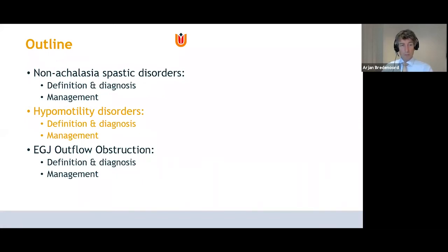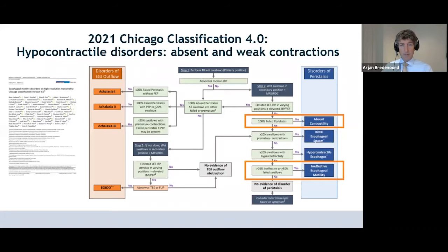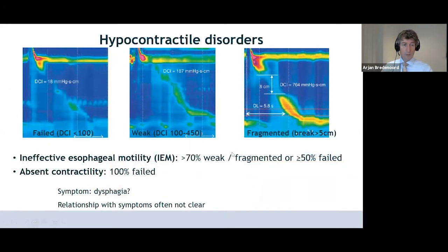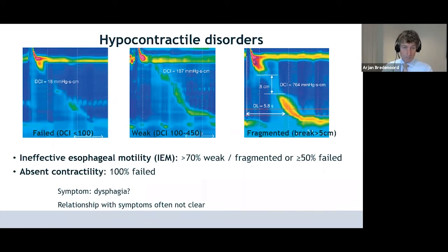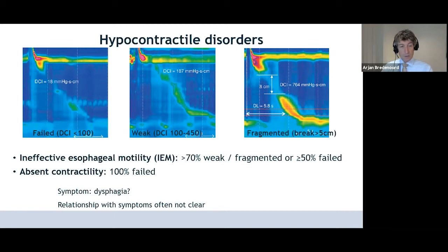Moving to hypomotility disorders: the Chicago classification defines absent contractility as 100% failed peristalsis, distinguished from ineffective esophageal motility, where some peristalsis is present but frequently failed. A swallow is failed when DCI is less than 100, weak when between 100 and 450, and fragmented when there's a large break. Ineffective esophageal motility is diagnosed when there's more than 70% weak or fragmented swallows, or more than 50% failed. Absent contractility means 100% failed.